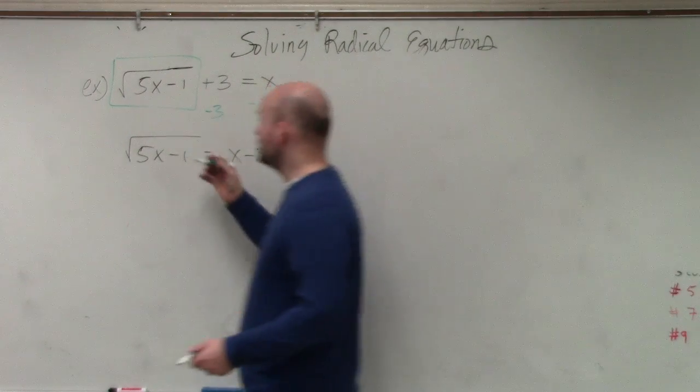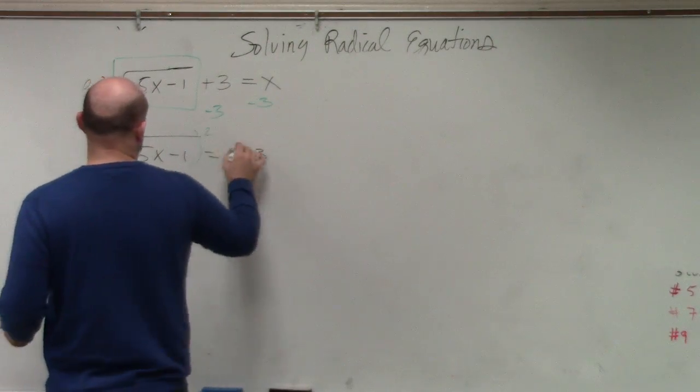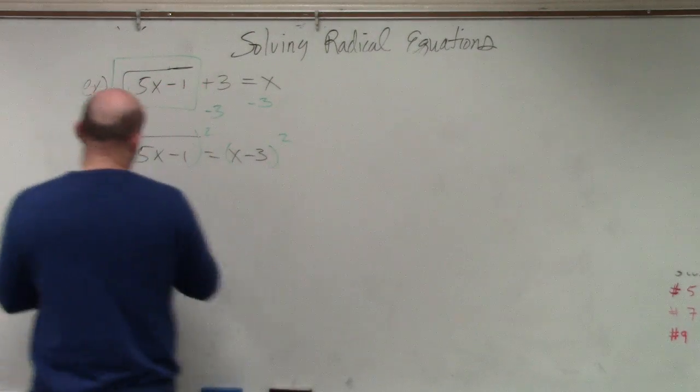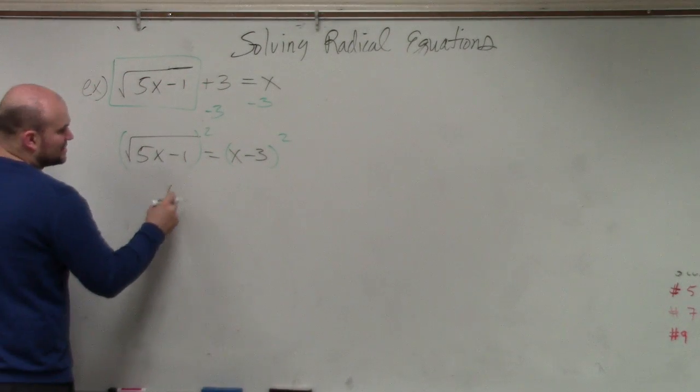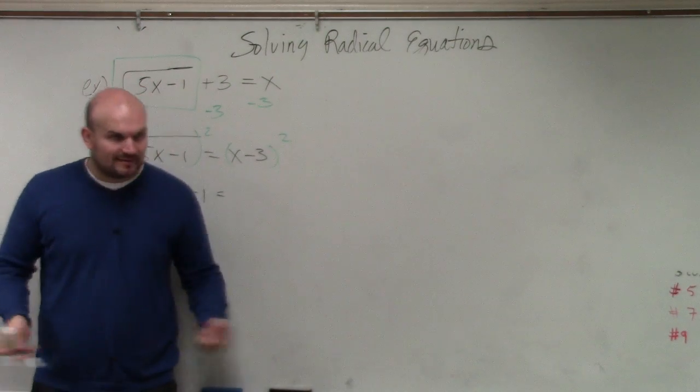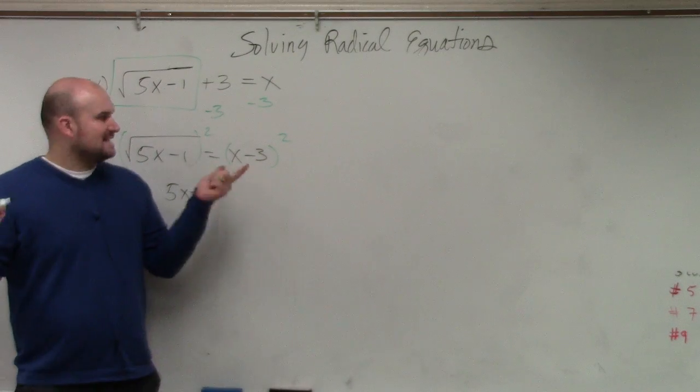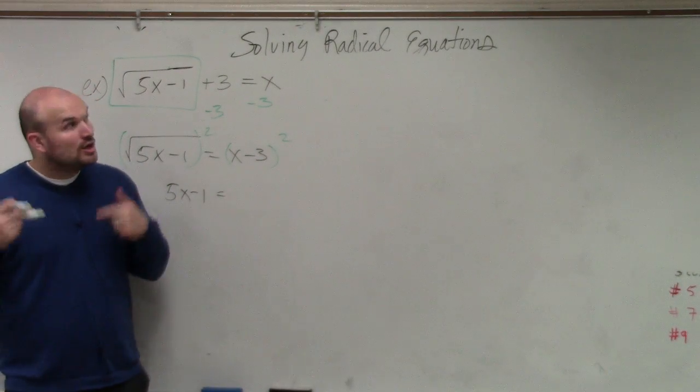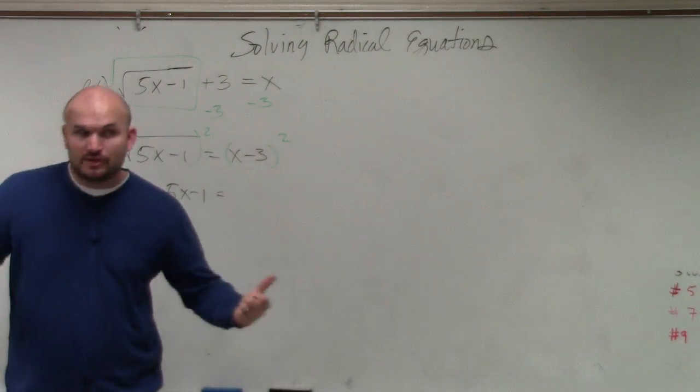Now I need to undo the square root. So I'm going to square both sides. Well, the square root of something squared is just going to be 5x minus 1. Here is x minus 3 squared. That is a binomial squared, x minus 3 times x minus 3, which produces a perfect square trinomial.